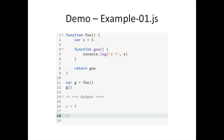That is because goo closes over the value x. Goo introduces its own scope, and if I had said var x inside goo I would have shadowed the x from foo — but that's not what I did. I just reference it, so goo closes over, encapsulates, and still references the variable x even though the function foo no longer exists.